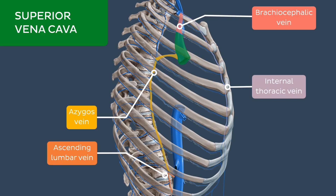The superior vena cava is contained in the superior thorax and ends at the level of the third costal cartilage.